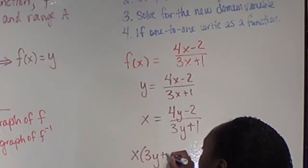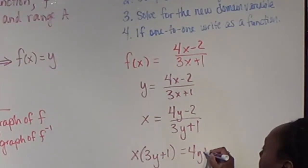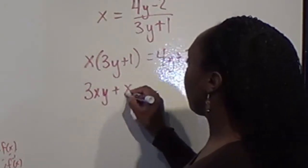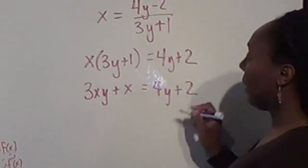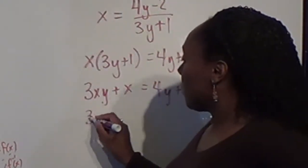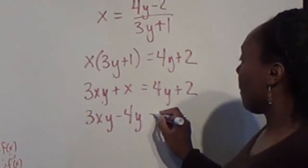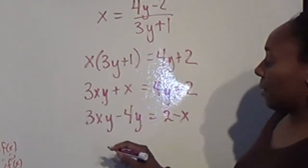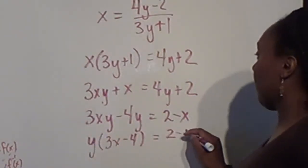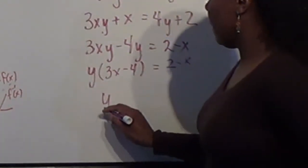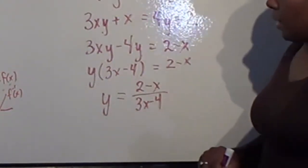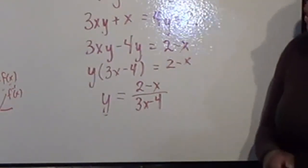Once I've done that, then I'm going to solve for the new domain variable, which means the y's. I'm going to solve for y. To solve for y, I'm going to have to multiply in this case. Go ahead and distribute. Notice we have y's on both sides of the equation, so I need to get all the y's to one side, and then I can factor out. So my y is going to equal 2 minus x over 3x minus 4. This, at this stage, is my inverse.